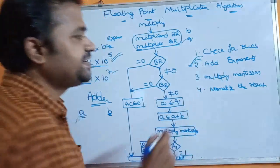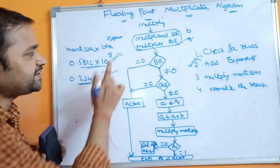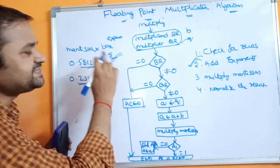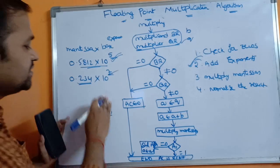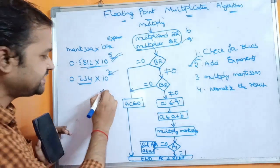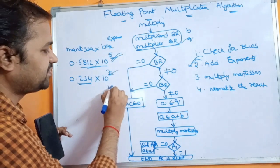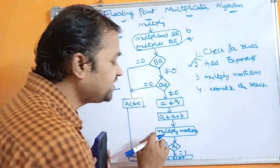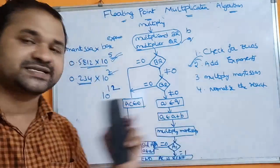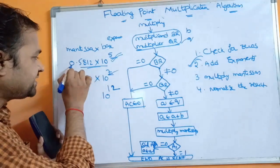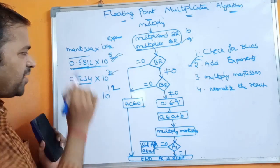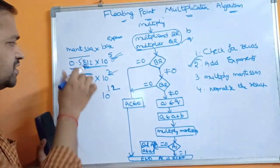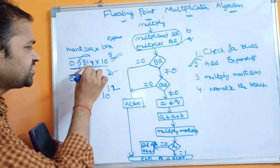In our example, the first number has exponent 5 and the second has exponent 7. Adding these gives 5 + 7 = 12, so the resultant exponent is 10^12. Next we must multiply the mantissas — the multiplicand mantissa is 0.5812 and the multiplier mantissa is 0.234.